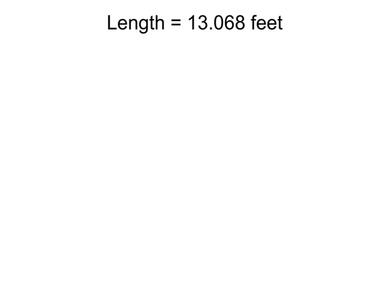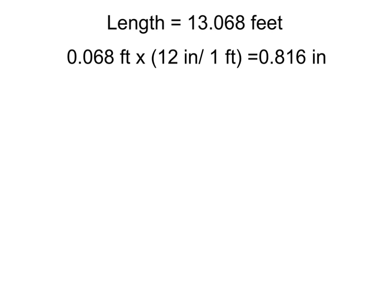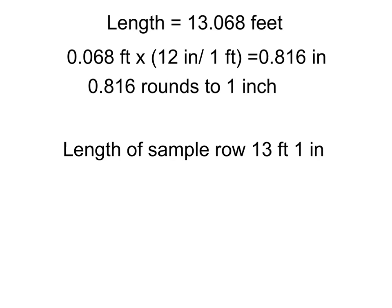Now let's talk a little bit about this 13.068 feet. We can see that we have 13 feet, but then we have a small decimal amount left over. That decimal portion of a foot also needs to be converted to inches. Since there are 12 inches in one foot, we will multiply .068 times 12, which gives us 0.816 inches. We will round that to the nearest inch, giving us a total length of 13 feet 1 inch for our sample row. This represents the amount of corn that is in one one-thousandth of an acre.